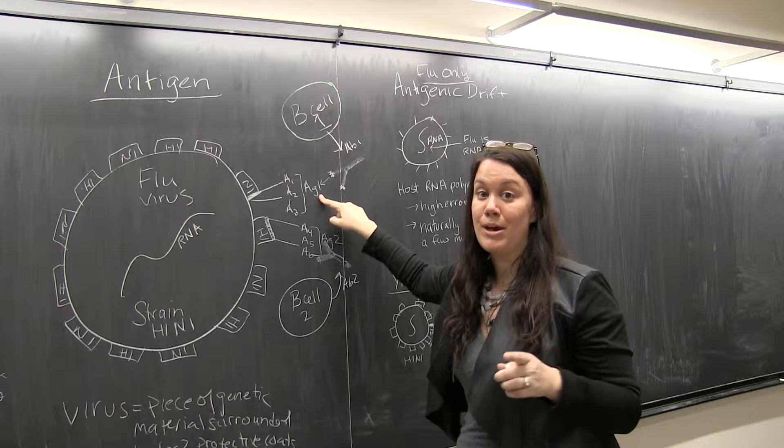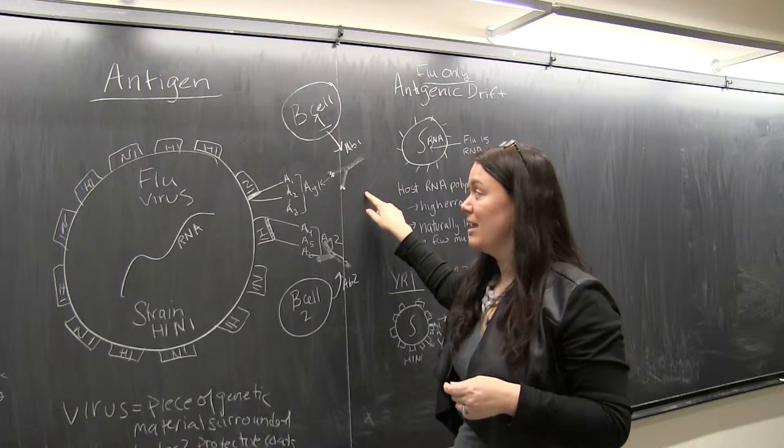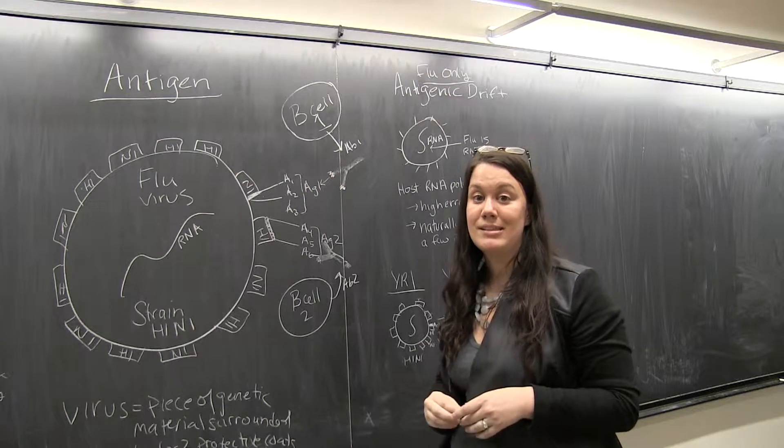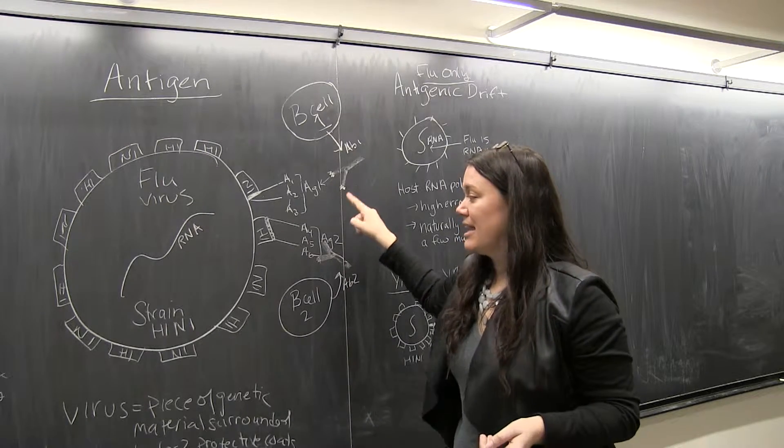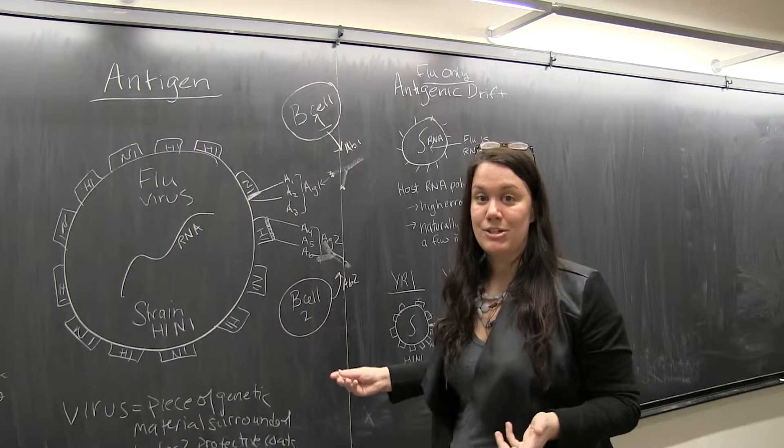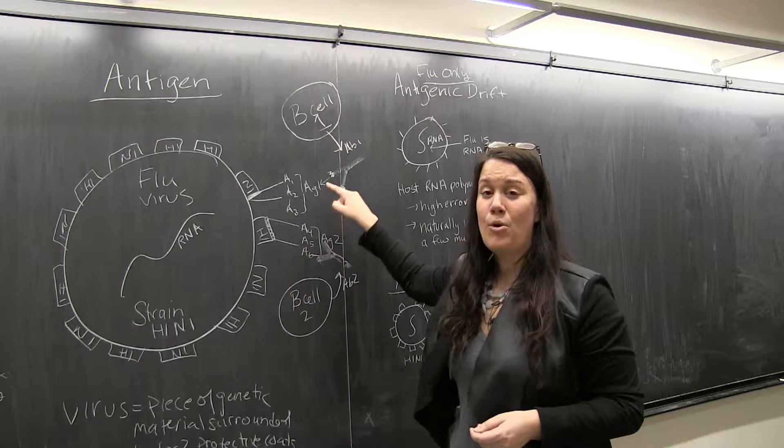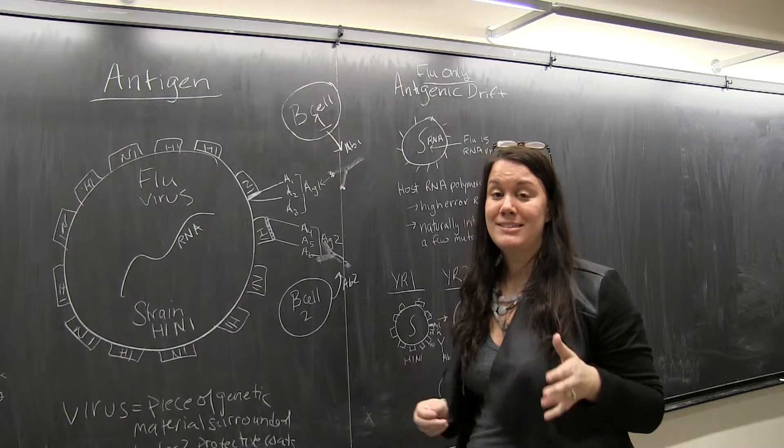And in this case it's antigen one. This antibody was randomly made to recognize this very specific sequence of amino acids. So antibody one cannot recognize just any antigen, it cannot recognize for example antigen two, it can only recognize antigen one. And why is this?